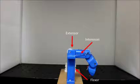Four tendons actuate the finger: a single extensor, two interossei, one on each side of the finger, and a single flexor that is routed internally.